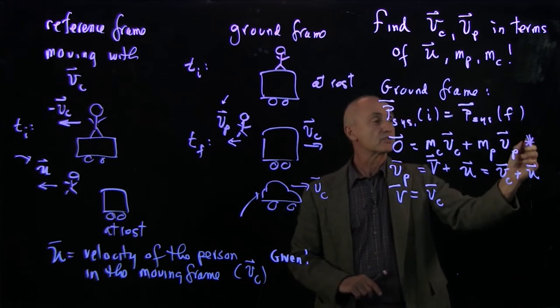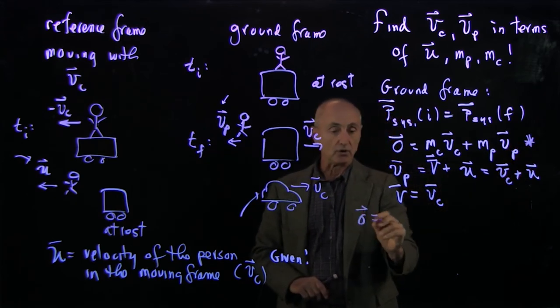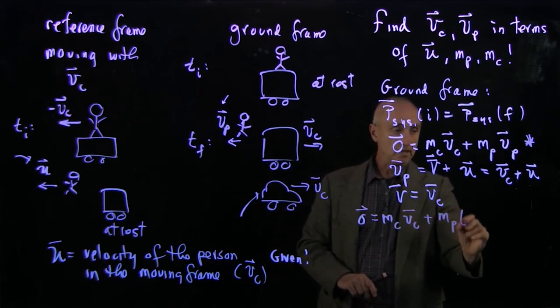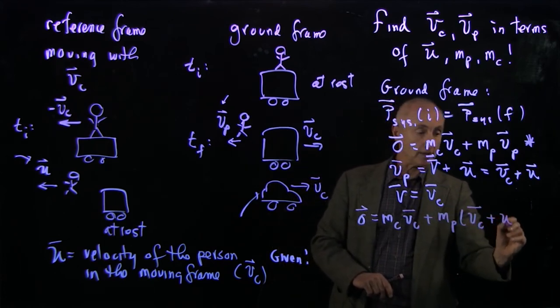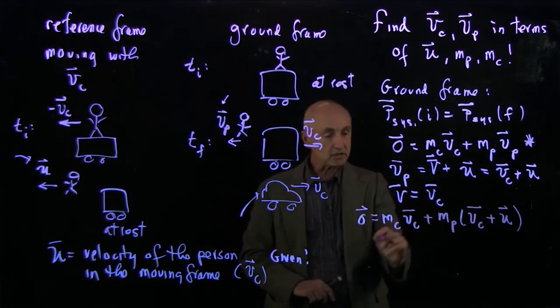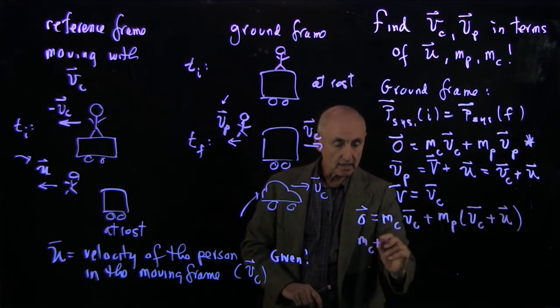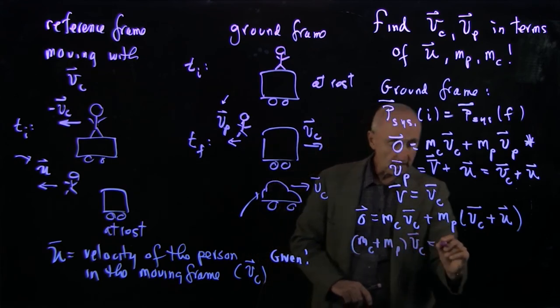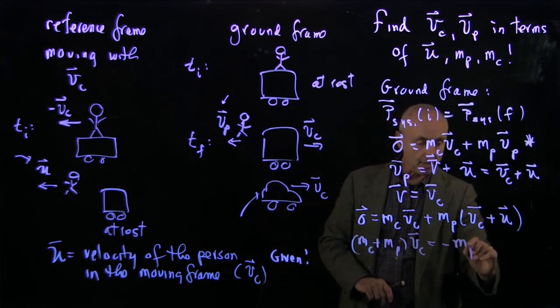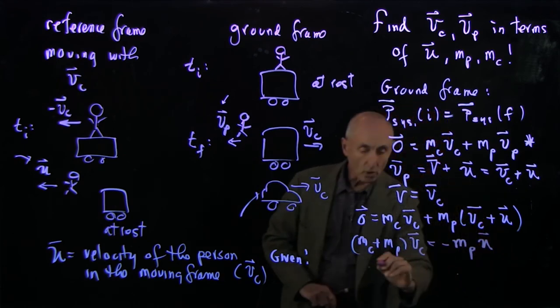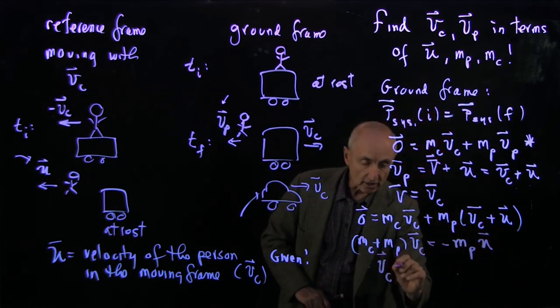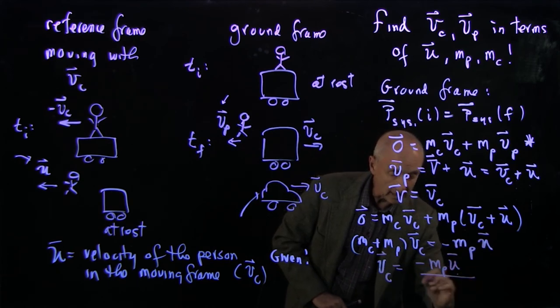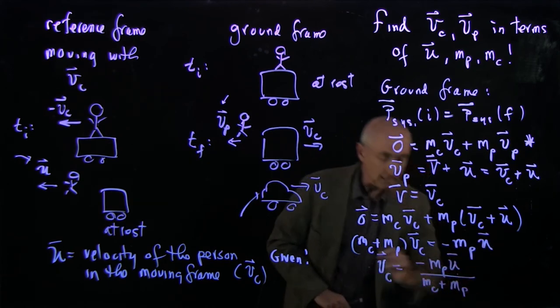And now I can use this equation to write it as zero equals mc vc plus mp times vc plus u. And by adding terms, I get that mc plus mp vc equals minus mpu. Or the velocity of the cart is equal to minus mpu divided by mc plus mp.